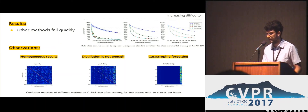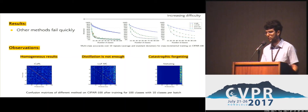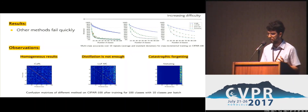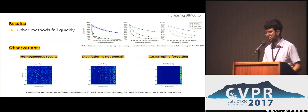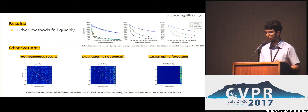Let's look at the confusion matrices, which better illustrate the problem. On the right, with fine-tuning and no constraint on the network: the x-axis is the predicted class as they appear, and the y-axis is the true class. The network just wants to predict the most recent classes. If we add the distillation, there is still a very sensible preference for the most recent classes. But with our method, we have a very homogeneous result with no preference for old or recent classes.